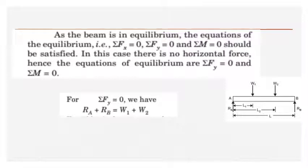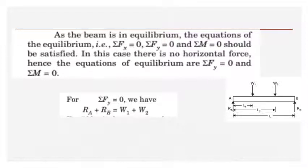Applying Sigma FY = 0: the vertical forces are RA and RB acting upwards, and W1 and W2 acting downwards. According to our sign convention, upward forces are positive and downward forces are negative. So: RA + RB − W1 − W2 = 0, which gives RA + RB = W1 + W2.